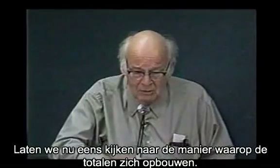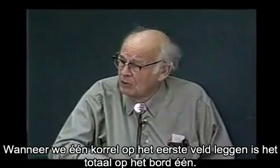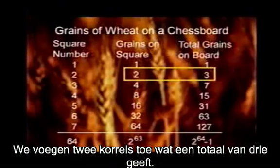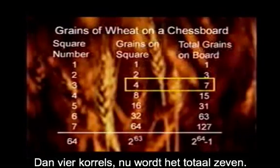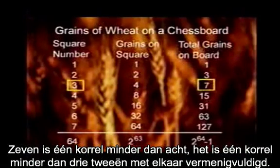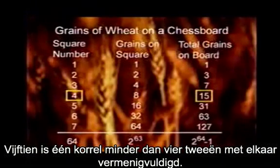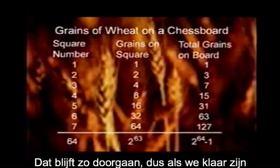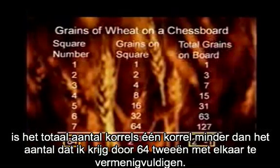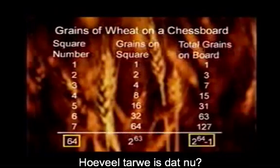Now let's look at the way the totals build up. When we have one grain on the first square, the total on the board is one. We add two grains, that makes a total three. We put on four grains, now the total is seven. Seven is a grain less than eight — it's a grain less than three twos multiplied together. Fifteen is a grain less than four twos multiplied together. Well, that continues in each case. So when we're done, the total number of grains would be one grain less than the number I get multiplying 64 twos together.